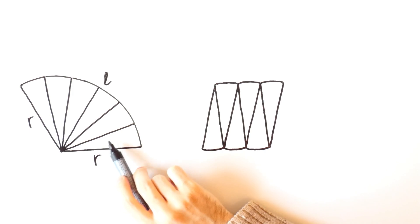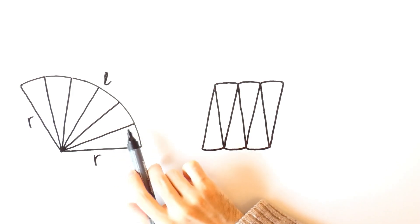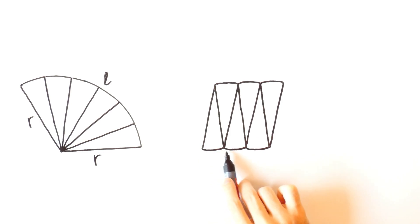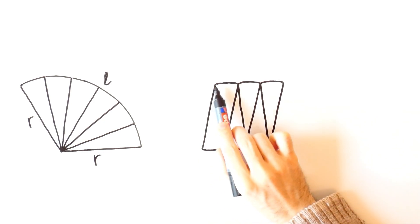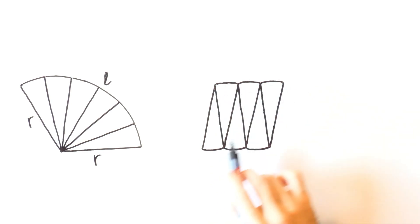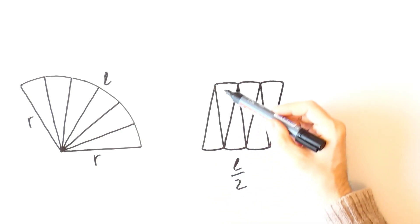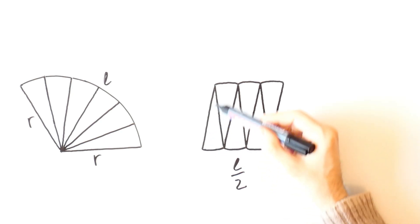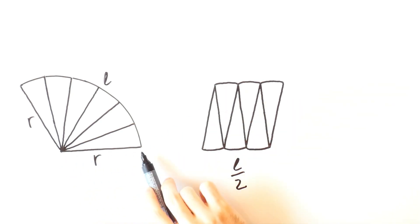We also want to have an even number of parts, which is in this case 6. That is because we want half of them to face this side and the other half to face that side. Then the length of this curved line is one half of the arc length, so that length is l over 2. And the length of this line segment is equal to the radius, which is r.